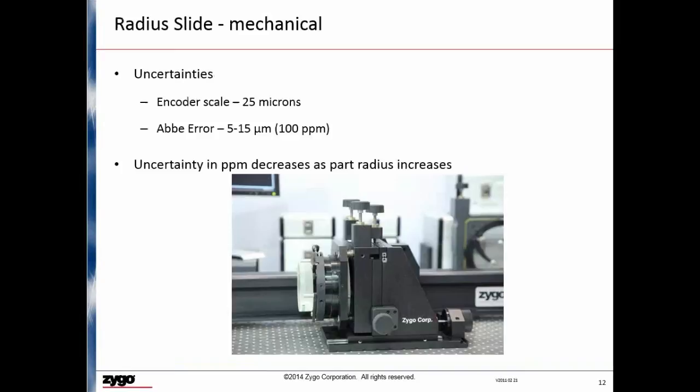On Zygo's radius slide, we use an aluminum guide rail with a plastic tape encoder. The encoder is calibrated prior to shipment to eliminate periodic errors that are typically present in the encoder tape. The total uncertainty of this type of rail, once calibrated, is between 25 and 50 microns over a translation distance of 1.5 meters. For a 50 millimeter radius, this is 50 to 1,000 parts per million in uncertainty, and for longer radii, say 500 millimeter, the radius scale uncertainty is about 50 to 100 parts per million.